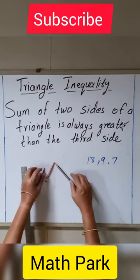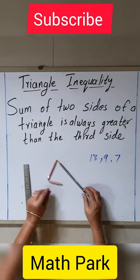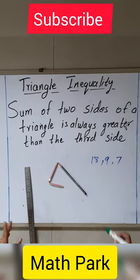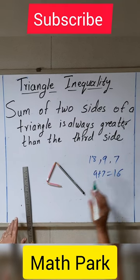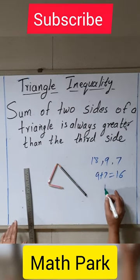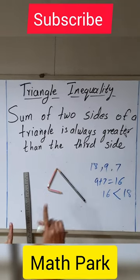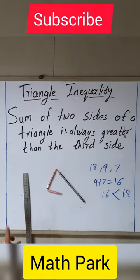What do we observe here? A triangle is not formed. Why is it not formed? Let's say 9 plus 7, which is 16. The sum of these two sides is 16, and 16 is less than the third side, which is 18. So the sum of two sides of a triangle should always be greater than the third side.